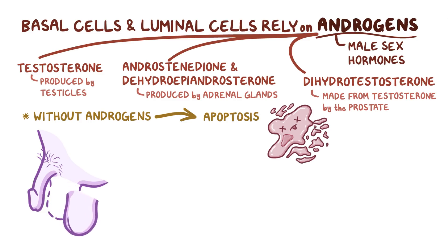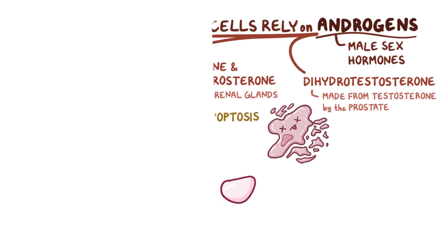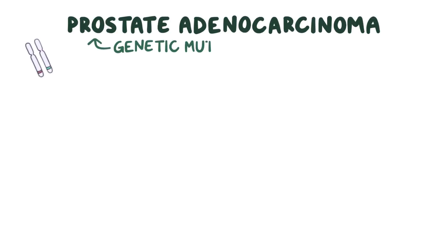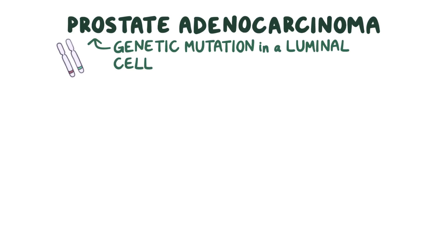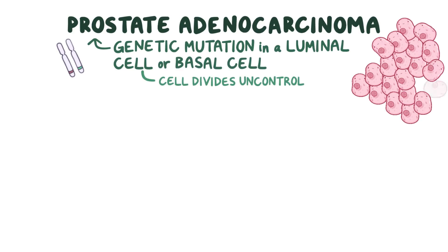For example, if the testicles are castrated or removed for some reason, the prostate significantly shrinks in size, largely due to the death of luminal cells. Prostate adenocarcinoma most often results from a genetic mutation in a luminal cell, but can also be a basal cell, and it results in that cell dividing uncontrollably.